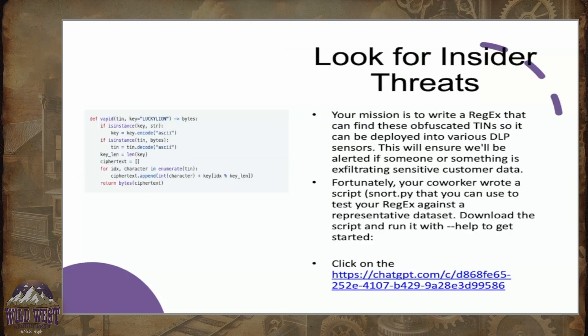The second challenge was called an insider threat. They gave us some data about a regex, and it was using the Lucky Lion Casino as part of the regex. It gave you a Python script that was provided. I ran the Python script in the LLM, put the script in there, along with the regex that it created, and it popped out the flag without a problem.